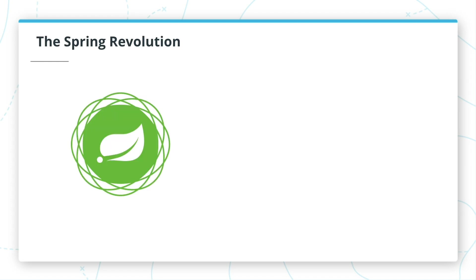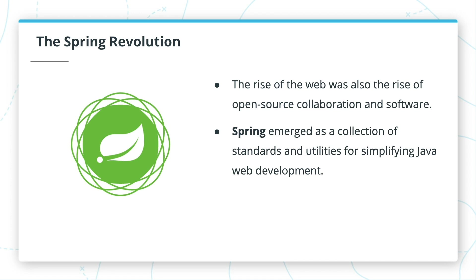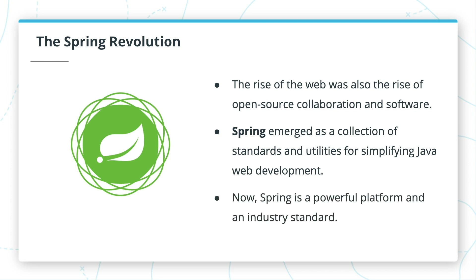As Java developers continued developing web apps, they frequently discovered common problems and solutions. The rise of the web made online collaboration with other developers easy, and the open source software scene filled with groups of veteran developers sharing the tools and utilities they had built to make life easier for themselves. One of those tools was Spring Framework, which was first designed in the early 2000s to eliminate boilerplate code for enterprise Java developers. It was wildly successful, growing over the years to support everything from cloud services to transaction management to batch processing of bulk data. Now it's an industry-tested standard, building on Java's successful enterprise architecture to power millions of projects and applications.